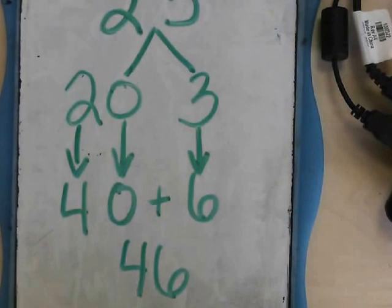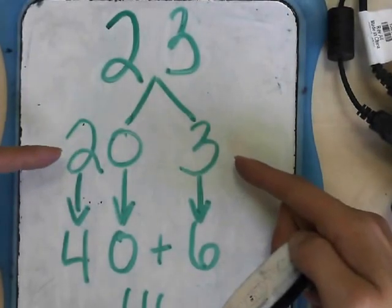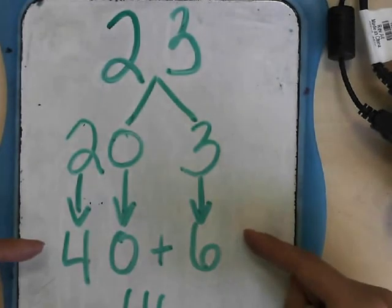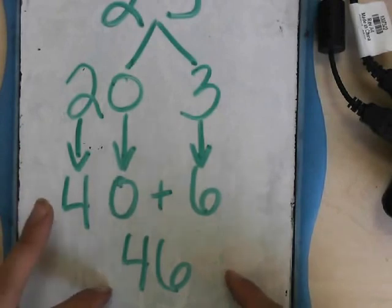So anytime you double a larger number, you break it down into parts, tens and ones. You double each number individually, and you add up the products at the end to make your big number. Awesome.